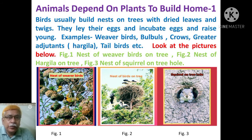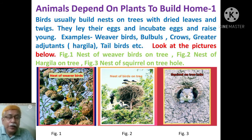Animals depend on plants to build homes. Birds usually build nests on trees with dried leaves and twigs. They lay their eggs, incubate eggs, and raise their young.